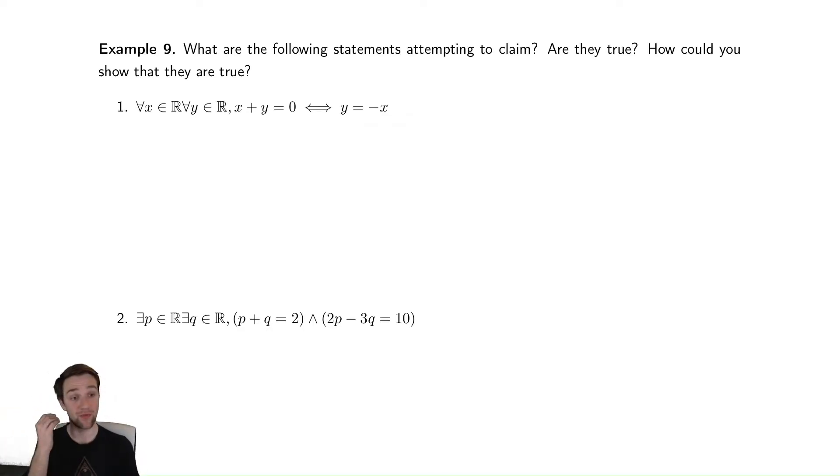The first one says that for all x and for all y, if x plus y is equal to zero, then y is equal to negative x. What is that saying? It's effectively saying that you can solve that given equation by subtracting x to the right hand side. Alternatively, it's saying y equals negative x is a solution to x plus y equals zero.